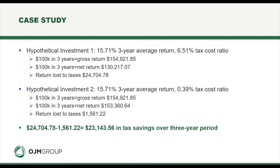We'll acknowledge this is an extreme example — you typically don't see a 6.5% tax cost ratio on a fund. But when you consider the impact of a lower cost ratio over one's investing life cycle — compounding over 30, 40 years and beyond — the difference can be quite substantial.